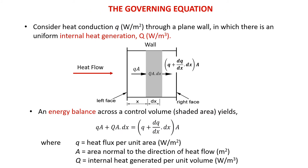Consider heat conduction Q through a plane wall in which there is a non-uniform internal heat generation Q. Therefore, the heat flux will increase due to the internal heat generation.